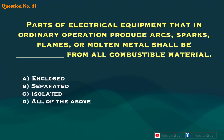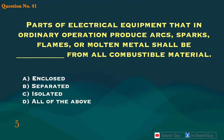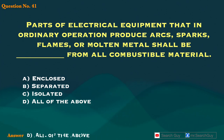Question 41. Parts of electrical equipment that in ordinary operation produce arcs, sparks, flames, or molten metal shall be blank from all combustible material. A. Enclosed. B. Separated. C. Isolated. D. All of the above. Answer: D. All of the above.